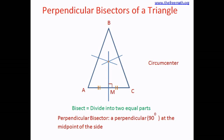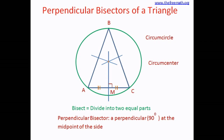If you use a compass and draw a circle with the circumcenter as the center of the circle, you can draw a circumcircle. The circumcircle passes through all three vertices of the triangle. The one I have drawn here is the circumcircle of this triangle, and the center of the circumcircle is the circumcenter of this triangle.